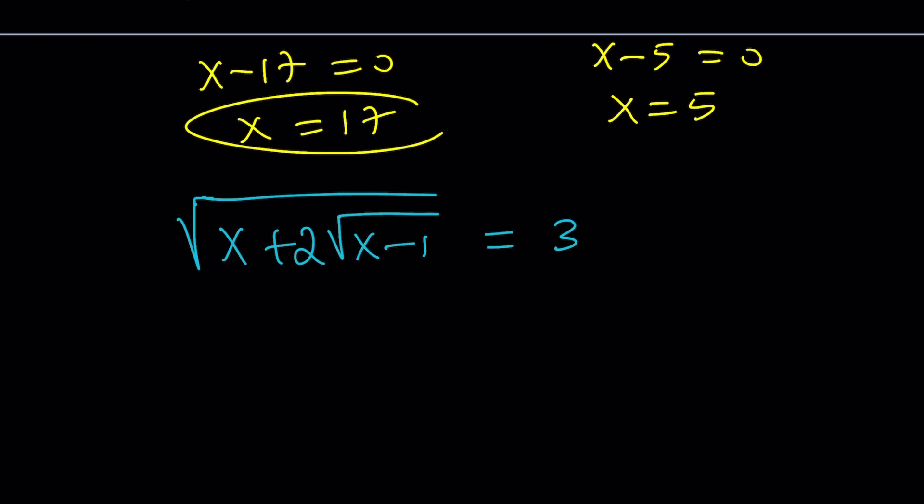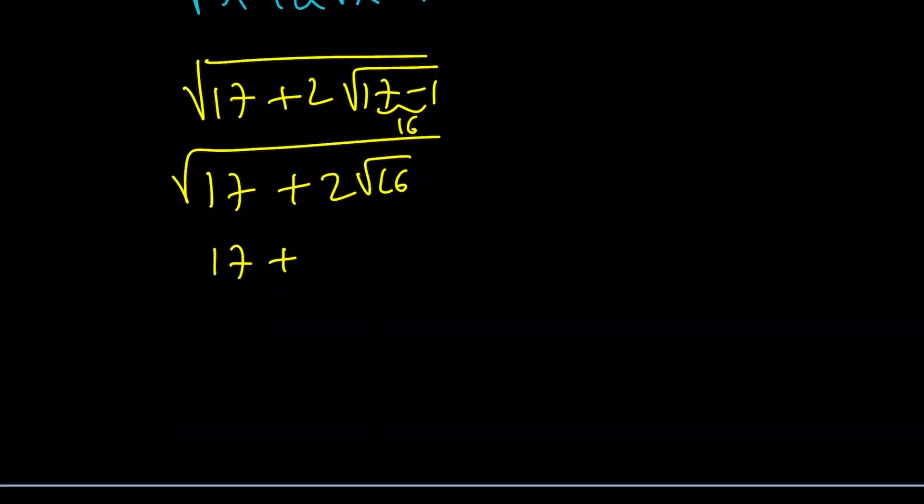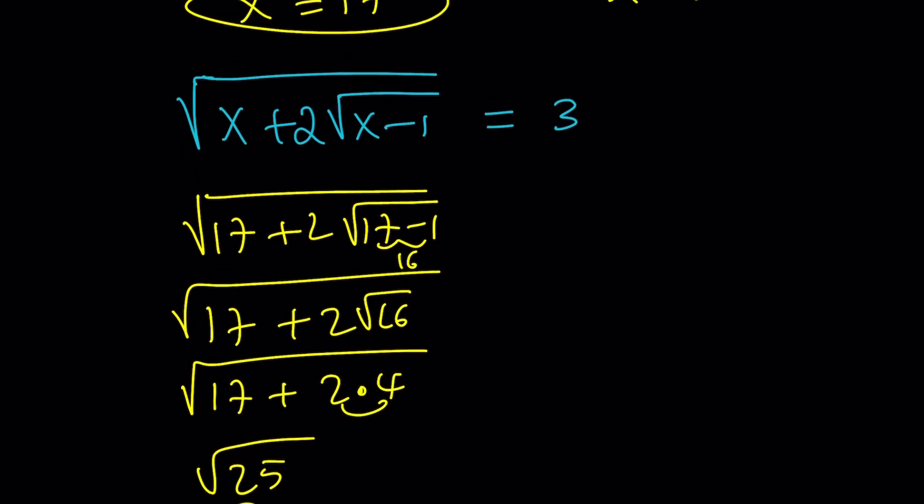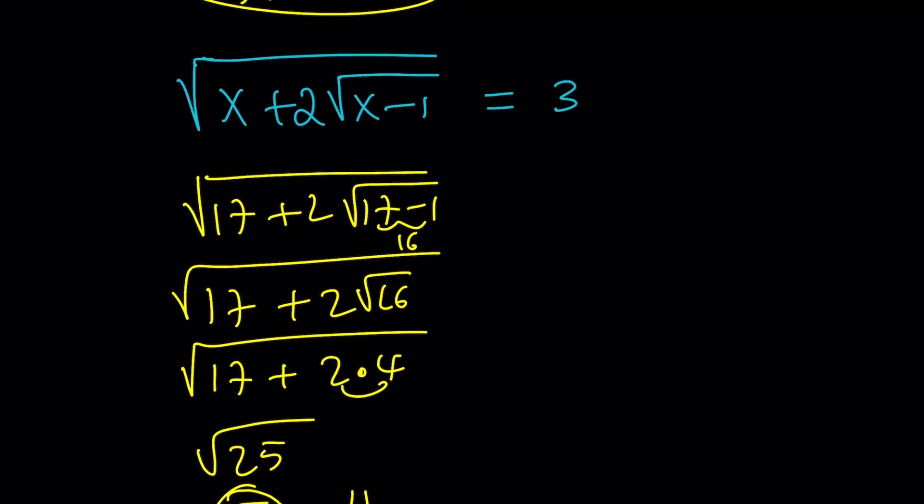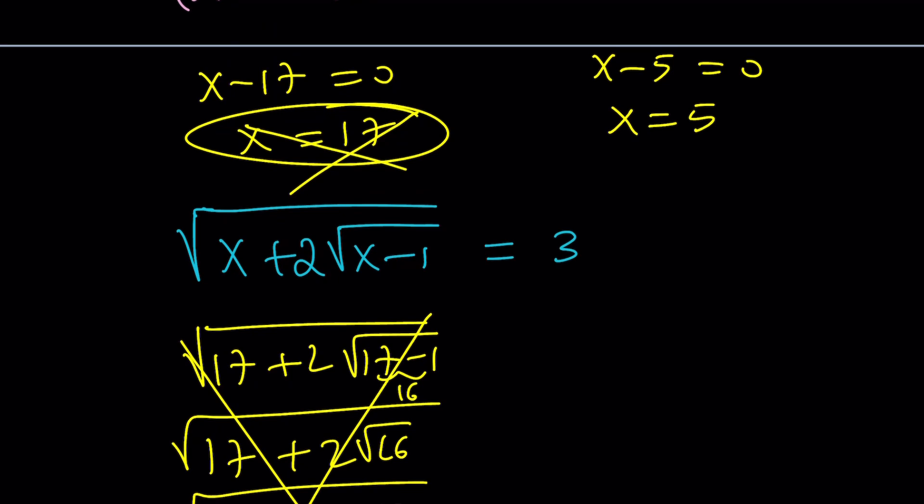So I'm going to replace x with 17. Square root of 17 plus 2 times the square root of 17 minus 1. This is 16. Square root of 16 is 4. This is 2 times 4 equals 8. 17 plus 8 is 25. And the square root of 25 is 5. Well, not so great because we were supposed to get 3. Are you serious? This is not going to work. So that means x equals 17 is not good. Let's just cross out the whole thing because that's nonsense. This is what happens.